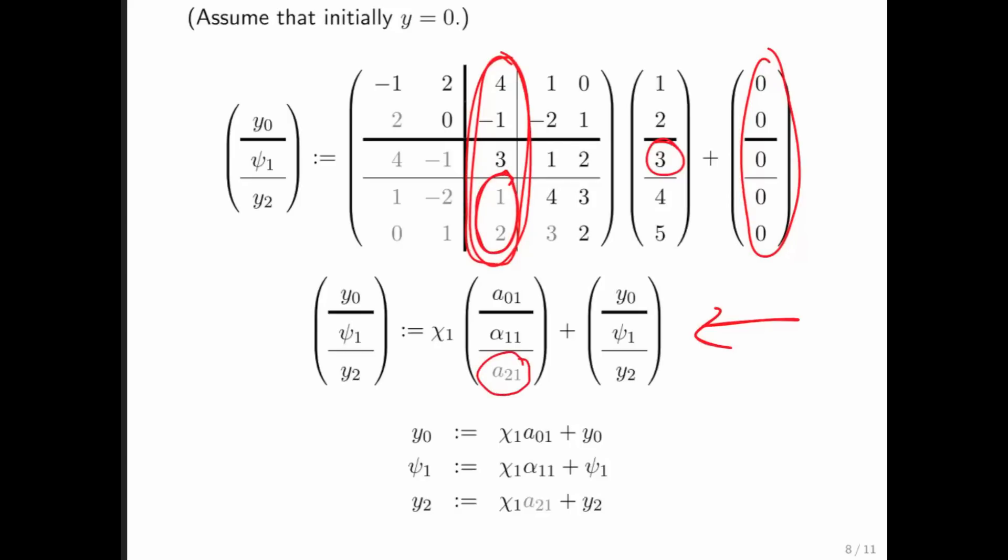a_{2,1} is not actually stored. What to do about that? Well, all we need to do is replace this part by chi_1 times a_{1,2} transpose plus y_2. And we're good. Because notice that this part right here is just the transpose of that part right there.